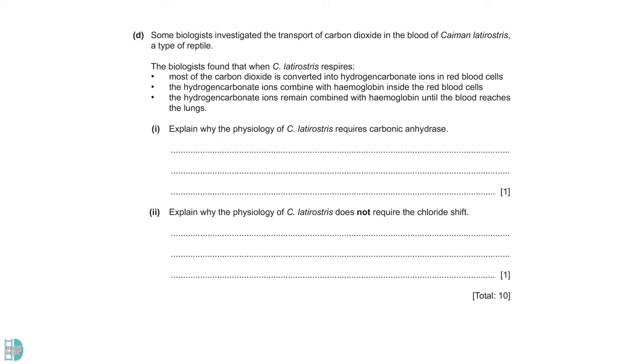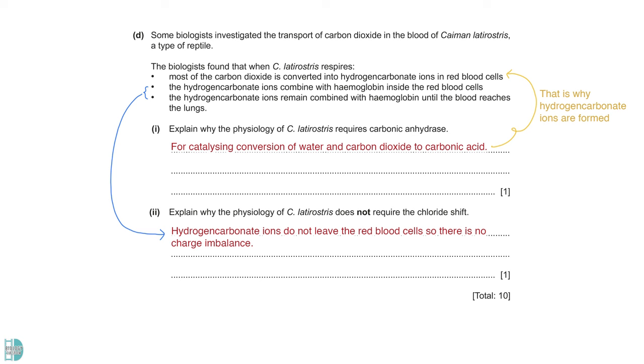D talks about the transport of carbon dioxide in the blood of a type of reptile. Explain why the physiology of C. latirostris requires carbonic anhydrase. Like in the human body, the enzyme catalyzes the conversion of water and carbon dioxide to carbonic acid. Hydrogen carbonate ions will form afterwards. Explain why the chloride shift is not required. Bullet points 2 and 3 show that hydrogen carbonate ions do not leave the red blood cells. So, there is no charge imbalance. The movement of chloride ions to counter the imbalance is unnecessary.